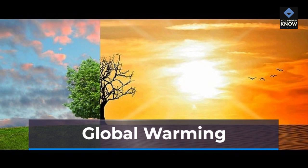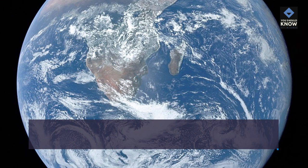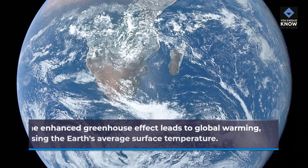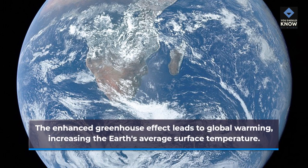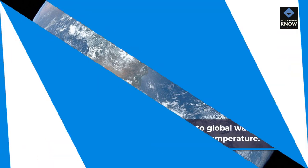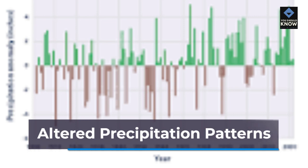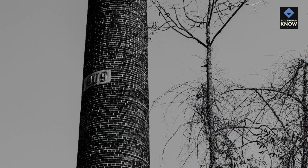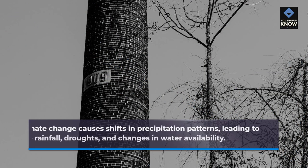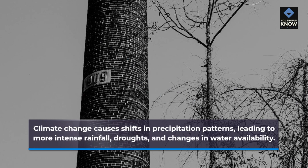Mechanisms of climate change. Global warming: the enhanced greenhouse effect leads to global warming, increasing the Earth's average surface temperature. Altered precipitation patterns: climate change causes shifts in precipitation patterns, leading to more intense rainfall, droughts, and changes in water availability.